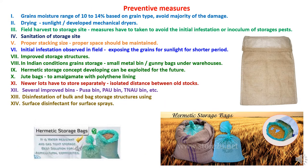Under preventive measures, various steps should be taken to avoid serious insect infestation. Grains should be dried to a moisture range of 10–14% based on grain type, which will avoid the majority of damage. Drying can be done under sunlight or using developed dryers. After harvesting, before shifting to storage, certain measures must be taken to avoid initial infestation. Cleaning of storage sites is a prerequisite, involving removal of dirt, debris, foreign particles, other insect pests, and infested grains.